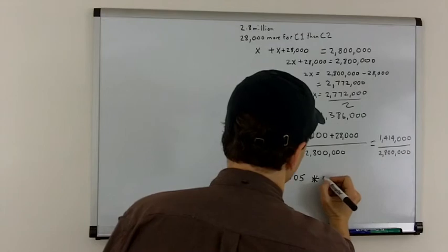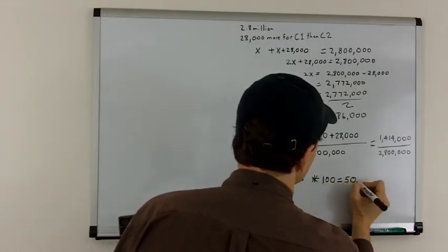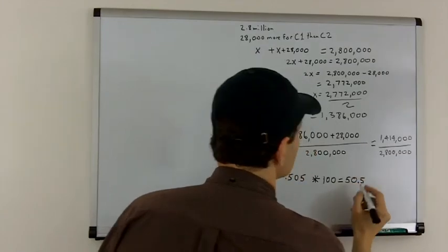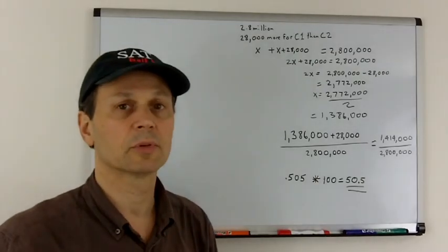So, we take this, we multiply by 100, and what we are left with is 50.5. So, the answer is 50.5%.